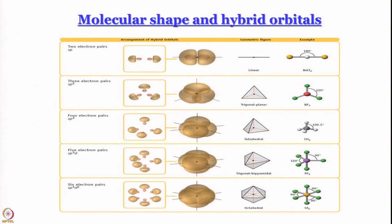The reason why molecules have these shapes - please remember, because very often by mistake we put the cart before the horse - the reason why molecules have this shape is that valence shell electron pair repulsion has to be minimized.